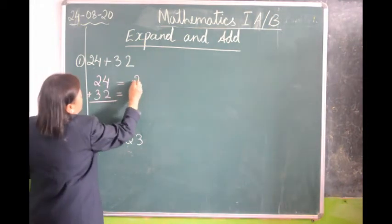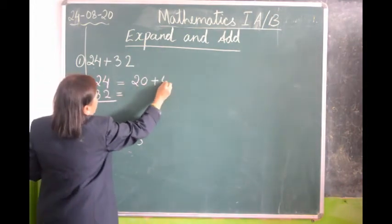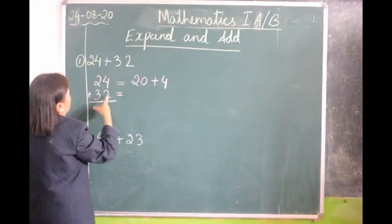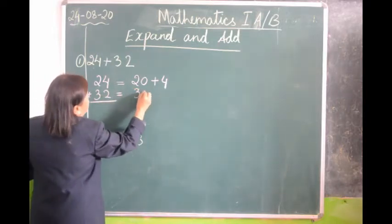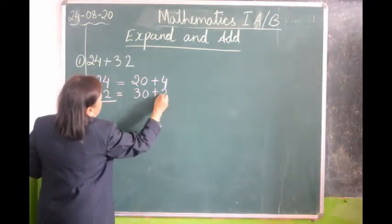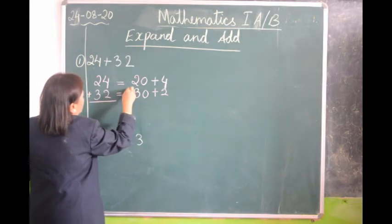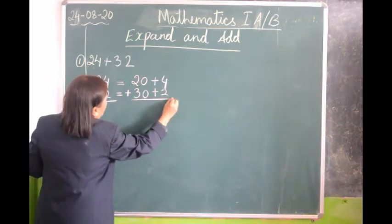Now we are going to expand this number. 20 plus 4 is 24. 30 plus 2 is 32. Then we write here plus. We draw a line.